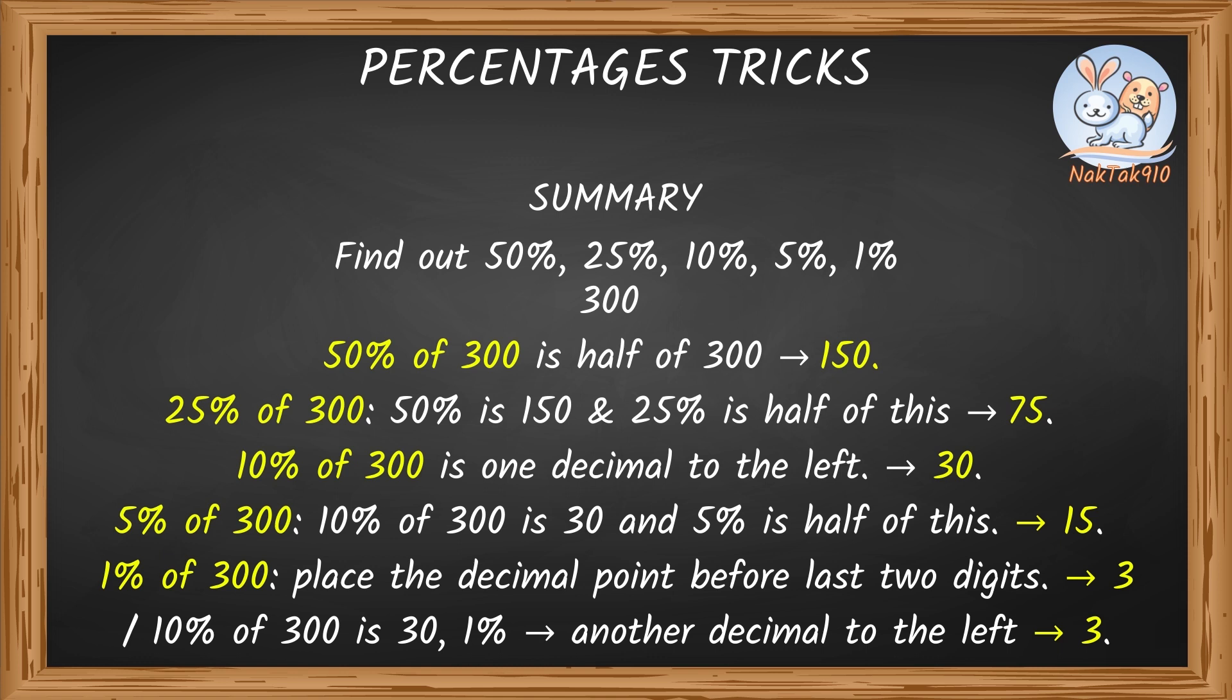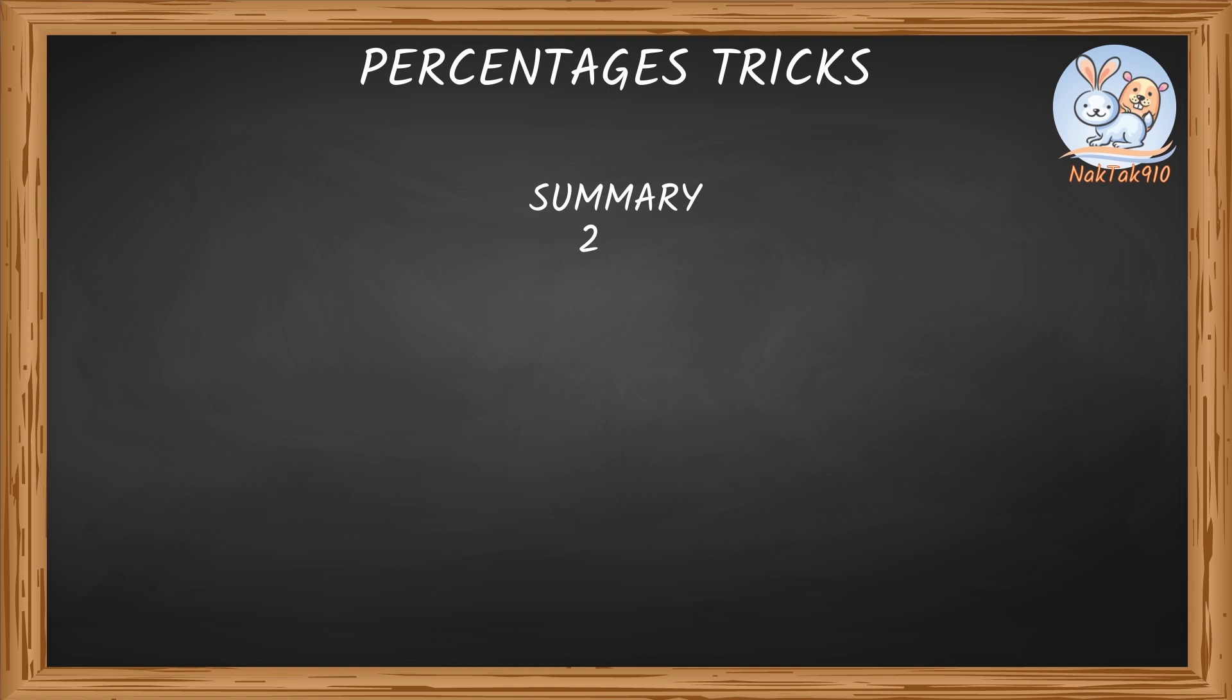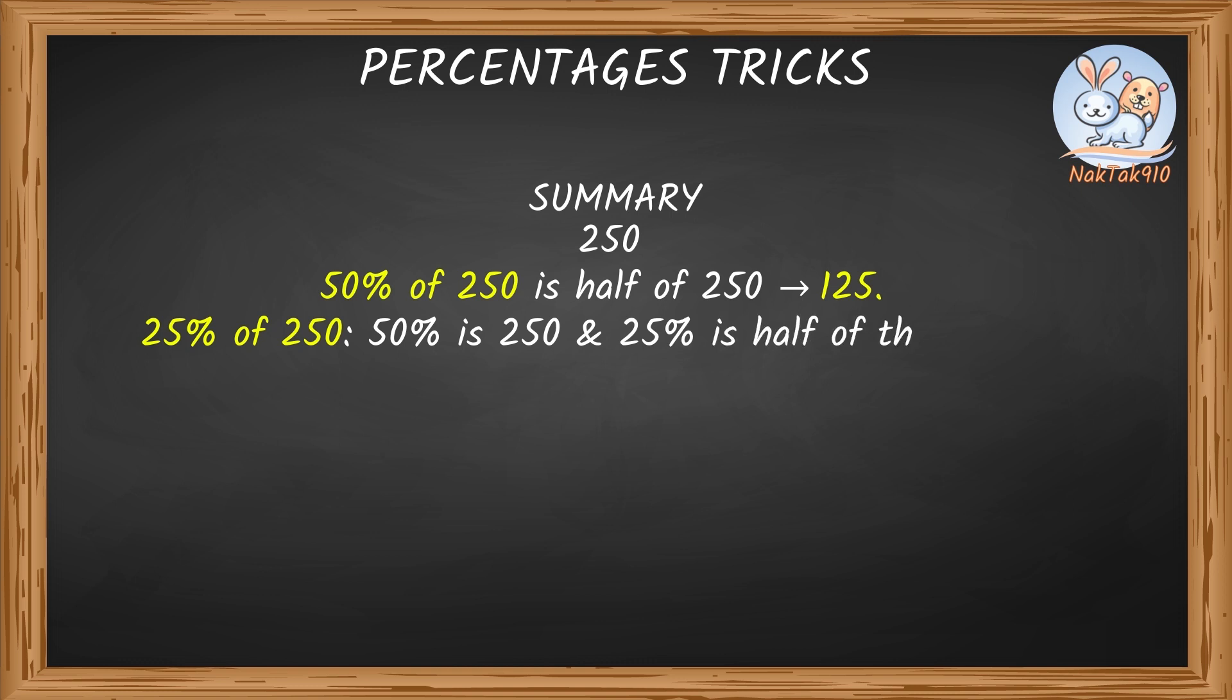Exactly! Now do the same for, say, 250. Friends, try solving this with me. Feel free to pause the video if you need more time. 50% of 250 is half of 250. That's 125. 25% of 250. 50% is 125, and 25% is half of 125. That's half of 120 is 60. But we need to find half of 125. So let's write 125 as 120 plus 5. Half of 120 is 60, and half of 5 is 2.5. Altogether, 62.5. 25% of 250 is 62.5.